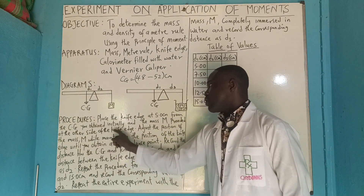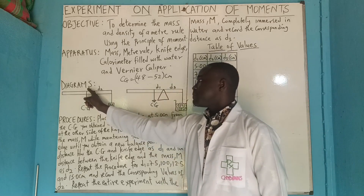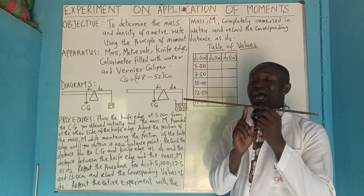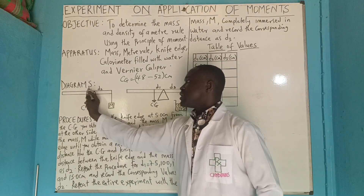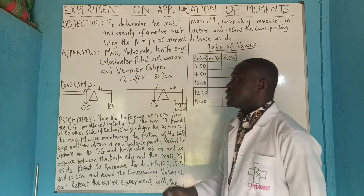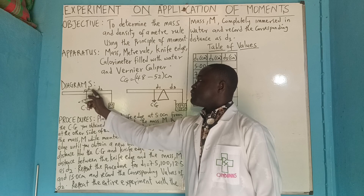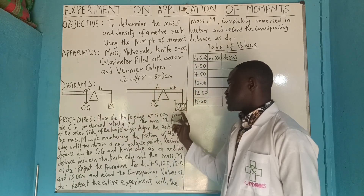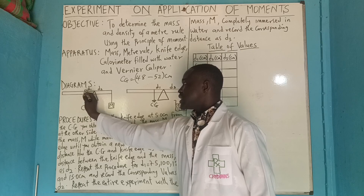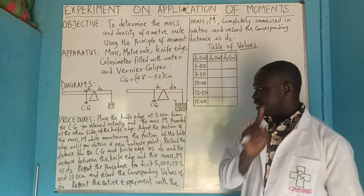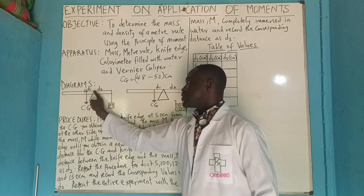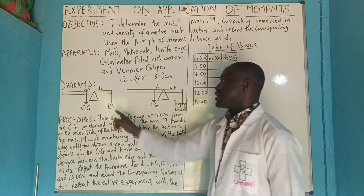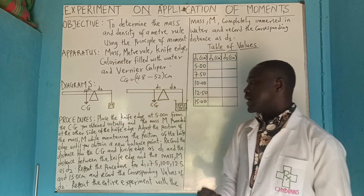Once you get your center of gravity, note it. Then the mass M is provided at the other side of the knife edge. If your center of gravity is at 50 cm, that means the meter rule balances at 50. You measure from 50 to the knife edge point — that distance is 5 cm. So the remaining side from knife edge to the end is 45 cm.